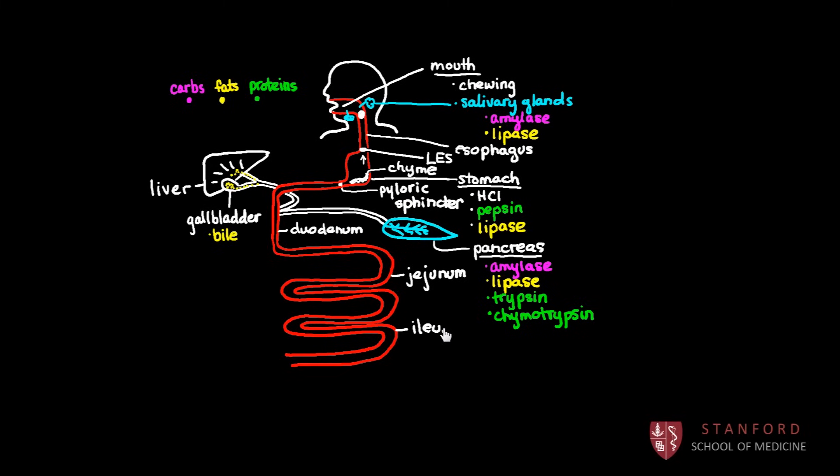And then the last part of the small intestine is called the ileum. And basically, the small intestine is where big particles of food are broken down into their absorbable units and absorbed in this tube, the small intestine. What happens next is that the small intestine joins the large intestine.